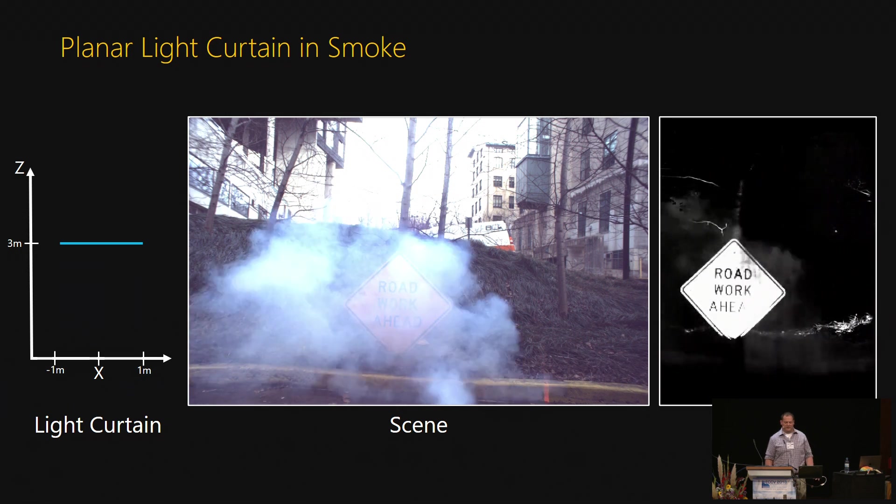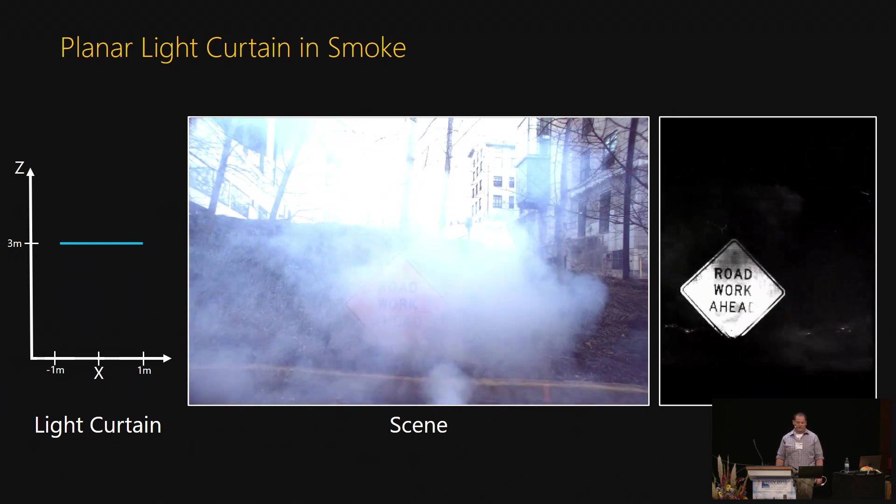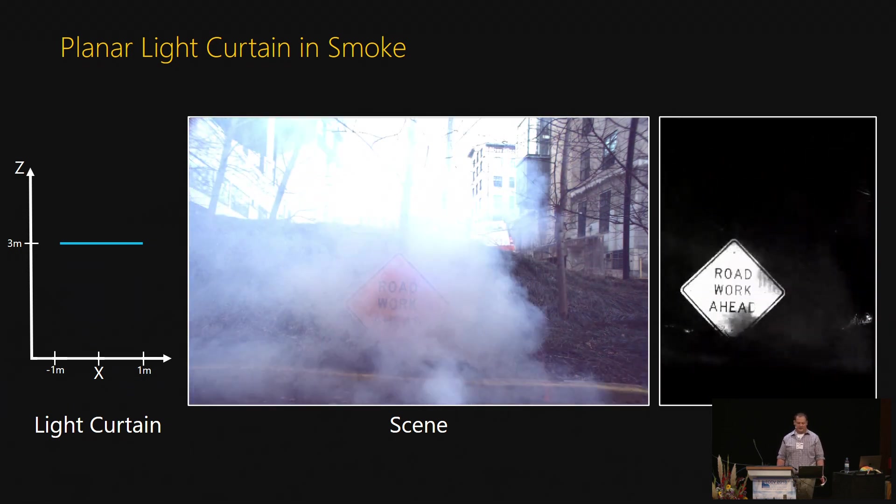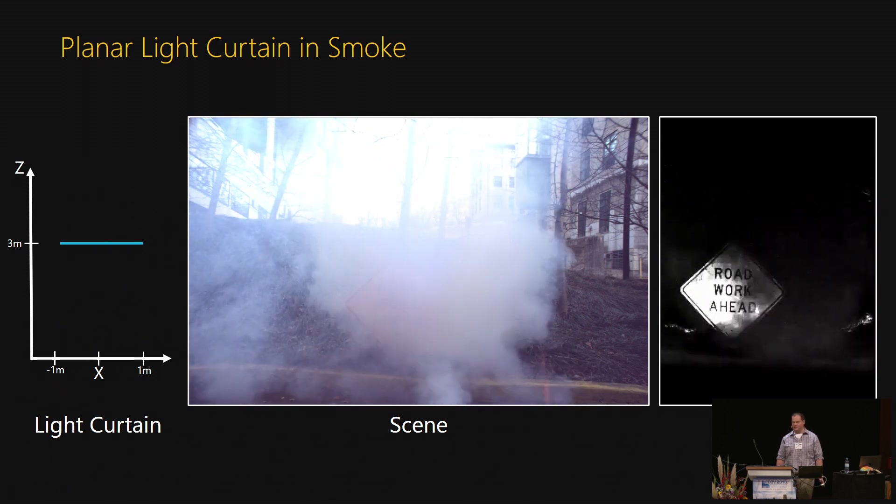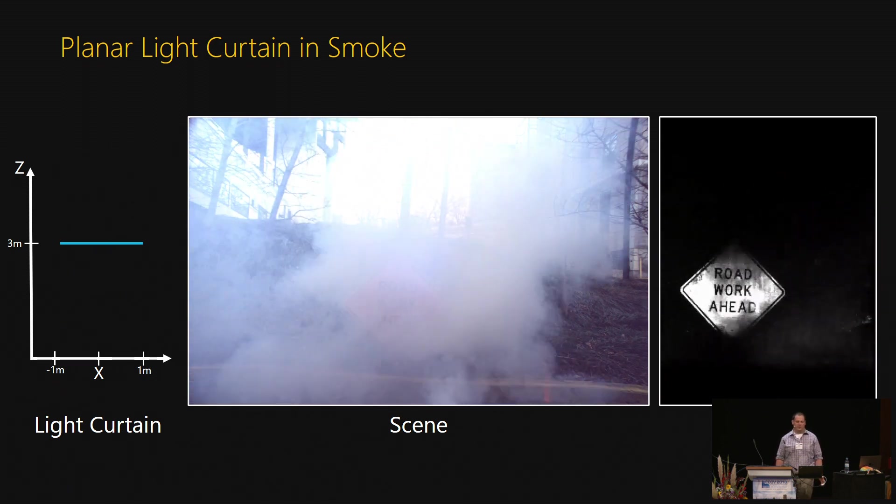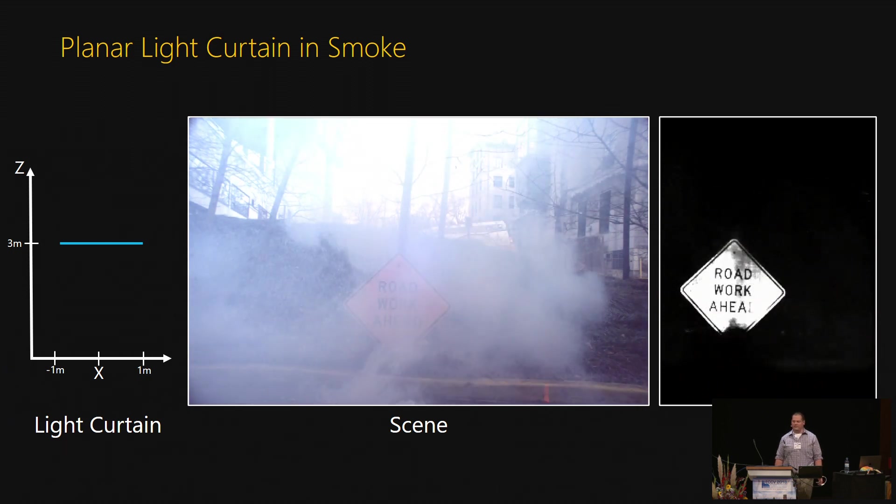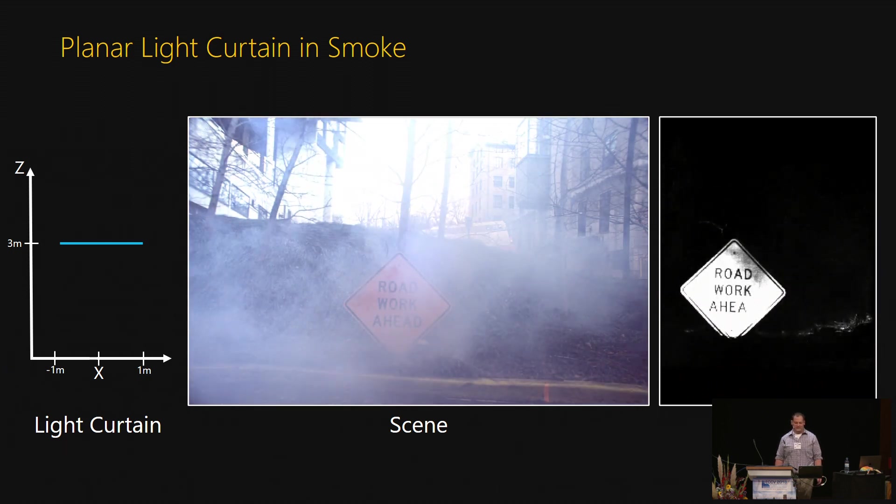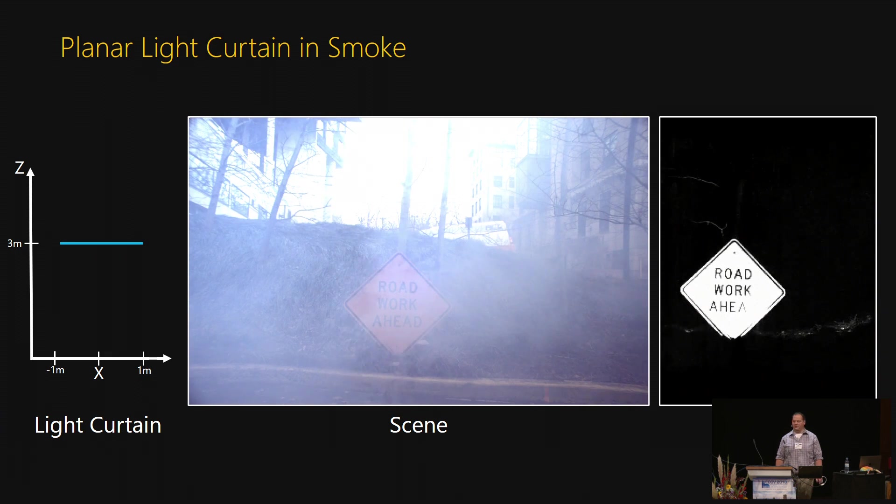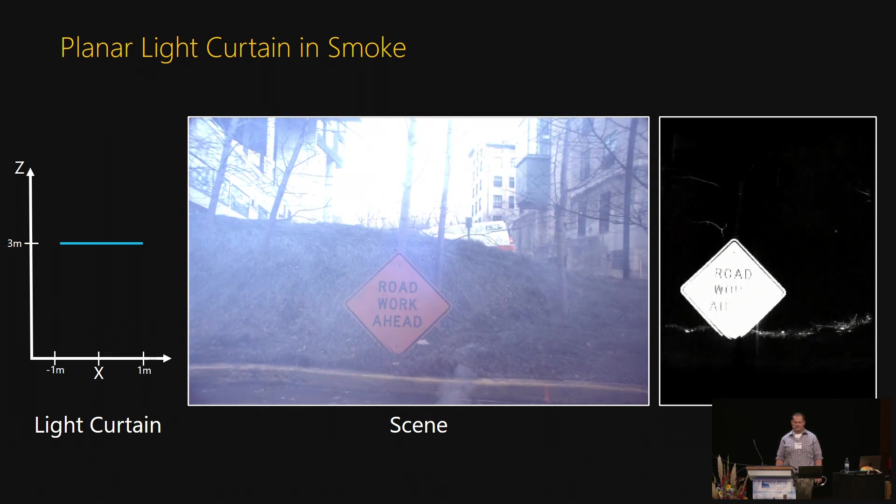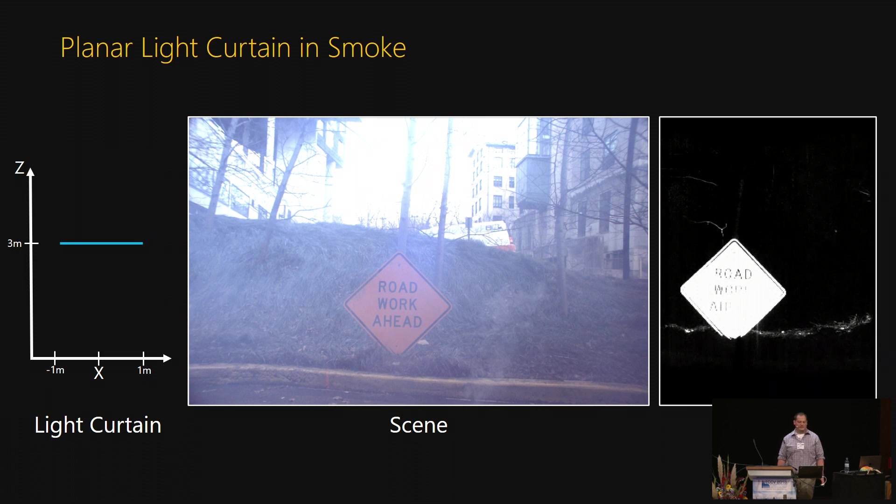This is a video of the light curtain imaging through smoke. Notice that our device can see the road sign even when the smoke is very dense and the sign is invisible in the regular camera. Since the light curtain only receives light from the intersection of the camera and the line sensor, it effectively blocks almost all other light in the volume, which significantly reduces scattered light. The device will still receive a small amount of multi-scattered light, but will be much smaller than normal imaging systems.